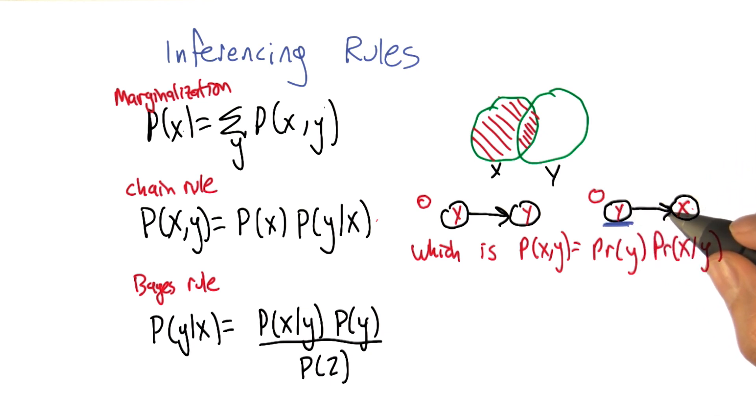So it has to be the second one. And then just to make sure, if you look at the second product, the probability of x given y, this second factor...